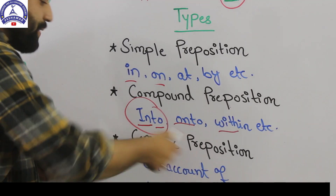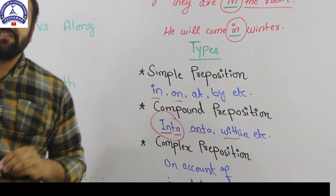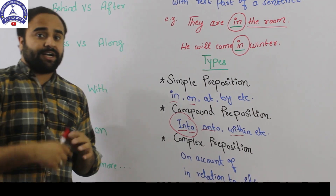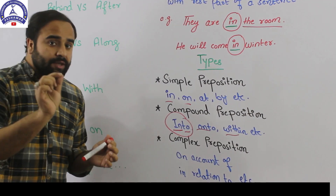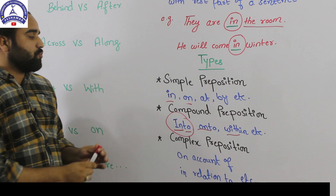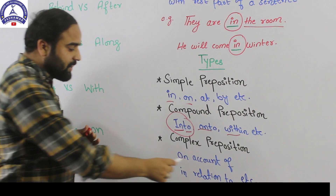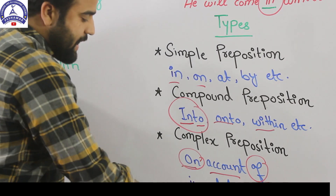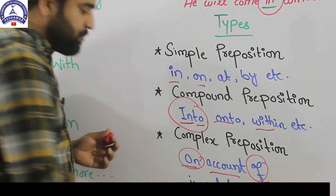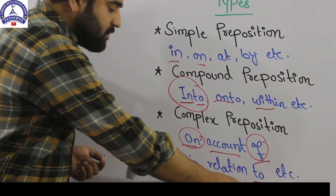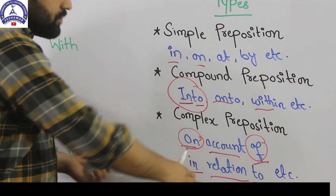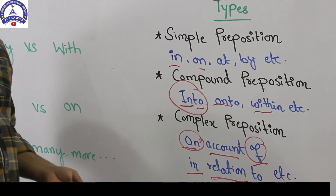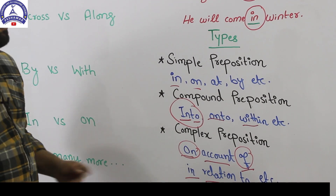Then we have complex preposition. Complex preposition is made of two or more words in which at least one word has to be a simple preposition. For example, 'on account of' has two simple prepositions. 'In relation to' has two simple prepositions, and it is not necessary that all the words are prepositions — one word can be a noun, a verb, or anything. These are the three types of preposition.